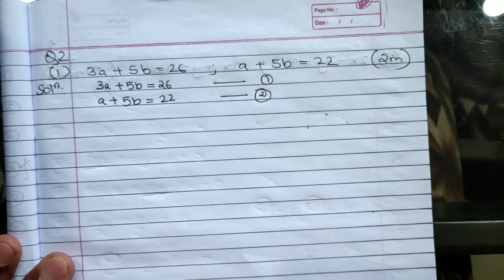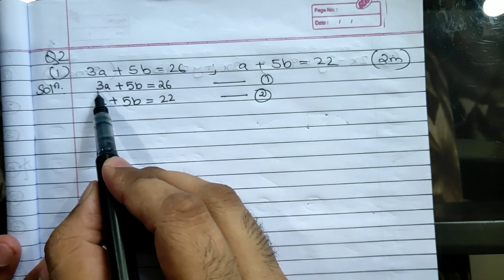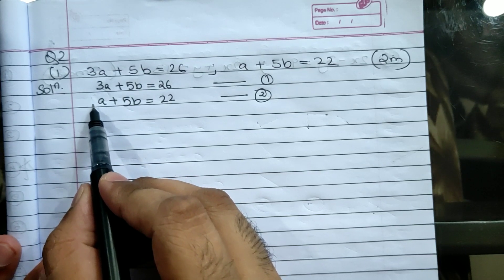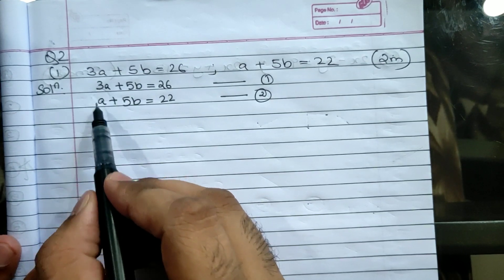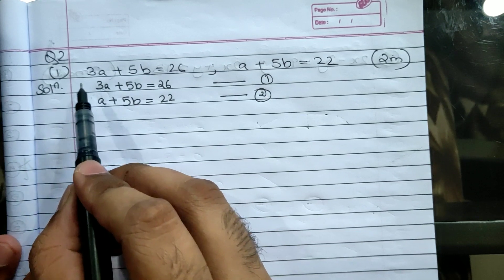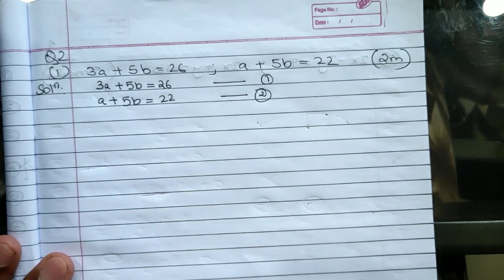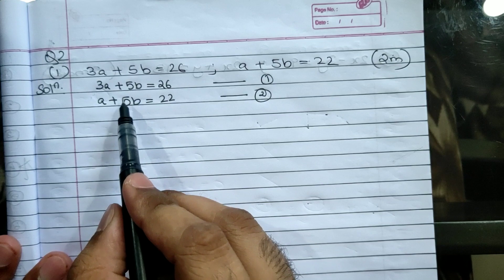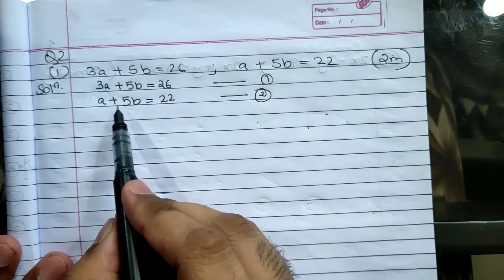Now let us observe the two equations. Here a coefficient is 3, here a coefficient is 1, so the coefficient is not same. Let us come to b. b coefficient in the first equation is 5, second equation b coefficient is 5 only. So here b coefficient is same, so we can eliminate b.